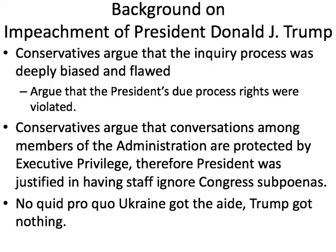Lastly, conservatives argued there was no quid pro quo — that Ukraine got the aid eventually, and President Trump never got the investigation into the Bidens. But a liberal would counter by saying they were attempting it, and once it was exposed, it fell apart. So that is my quick rundown on the impeachment of President Trump from both sides. I hope I did a good job showing you what both sides were saying, and we'll definitely explore this more in a debate soon.